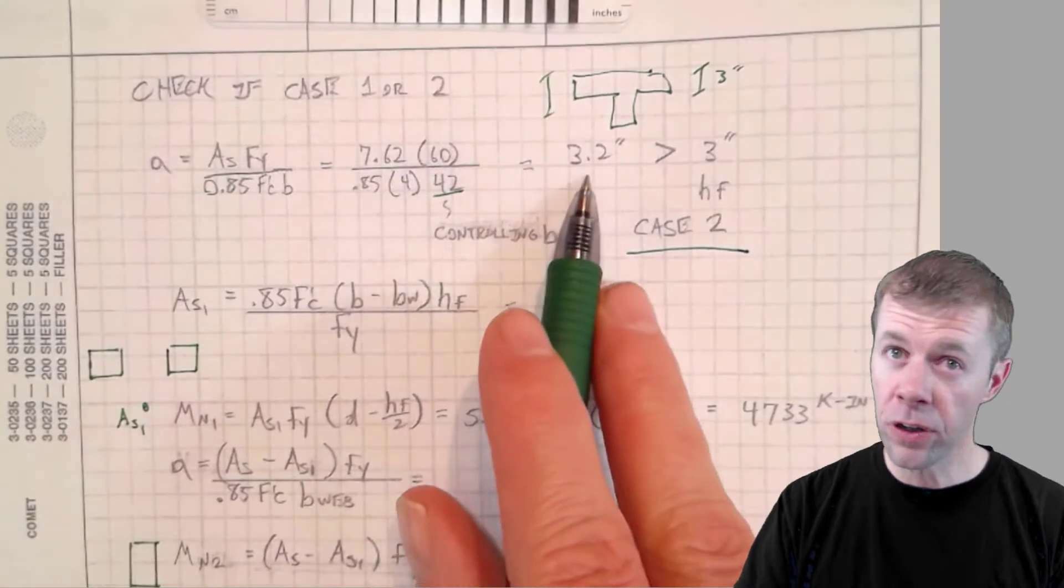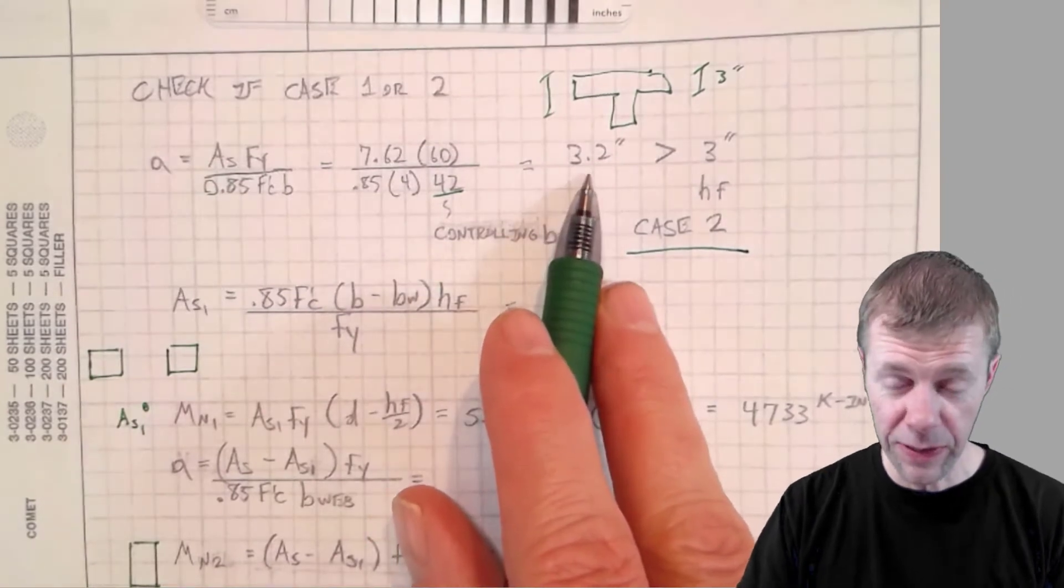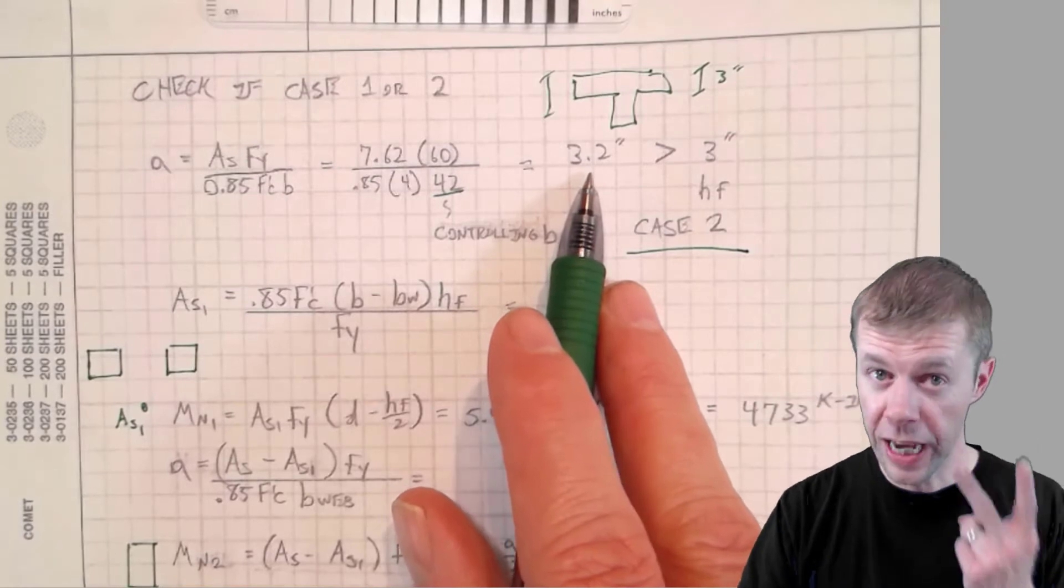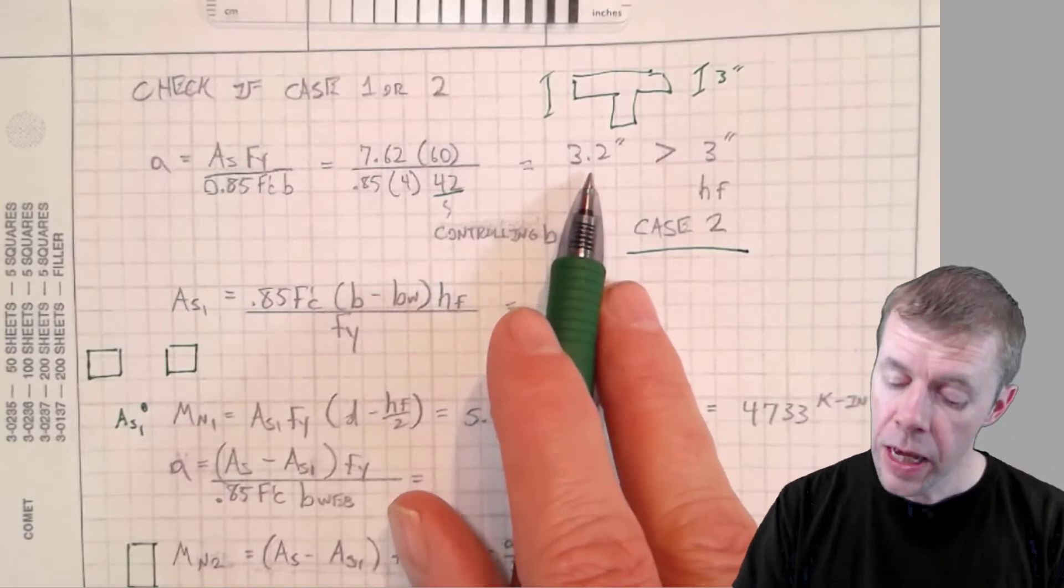And again, this is just a way to figure out if I'm in case one or case two. I don't need this again. I don't use this. I use a different A now for case two. If it was case one, I'm good. Here we go. Let's plug in.